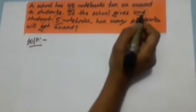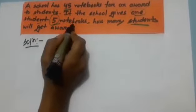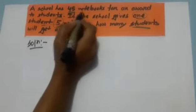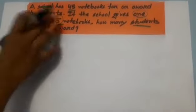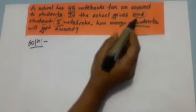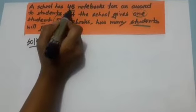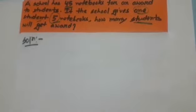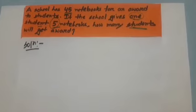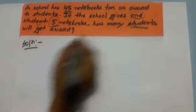So we realize: 5 notebooks get 1 student. 5 notebooks get 1 student. So 45 notebooks get how many students? We can solve this math easily by the division method. So we write down: 5 notebooks get 1 student; 45 notebooks get 45 divided by 5 students.